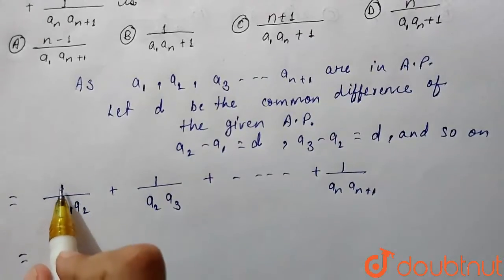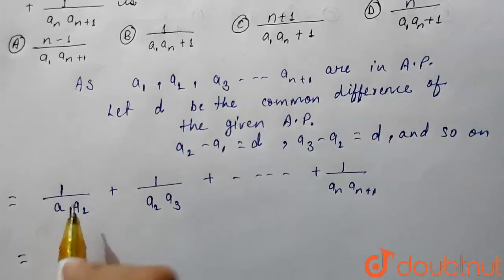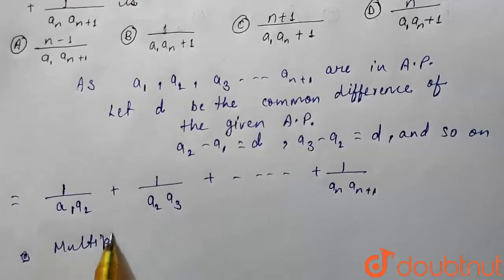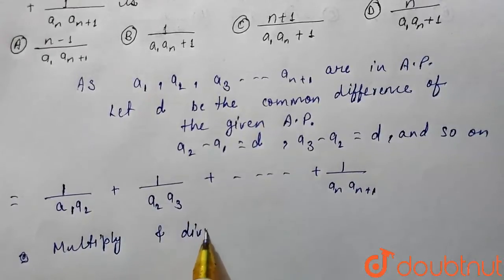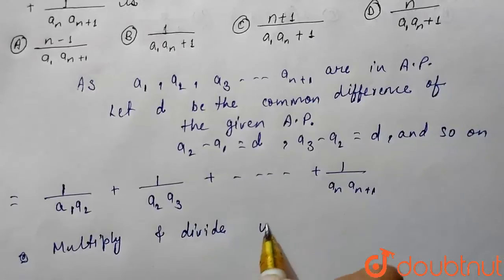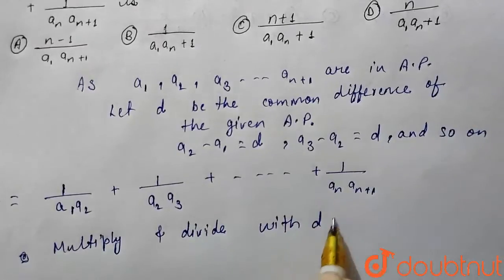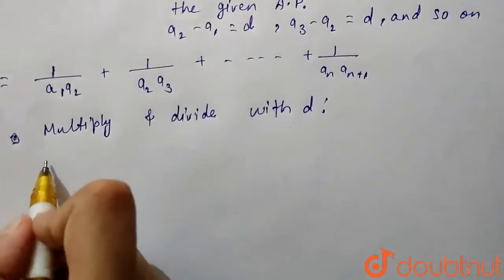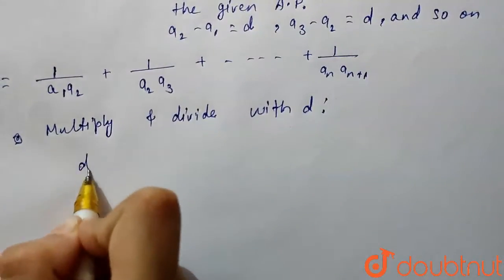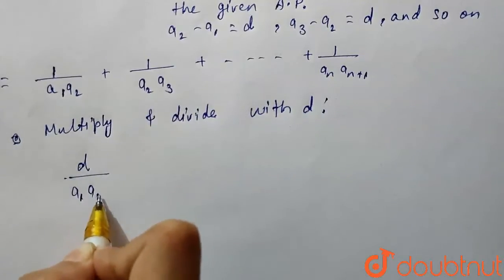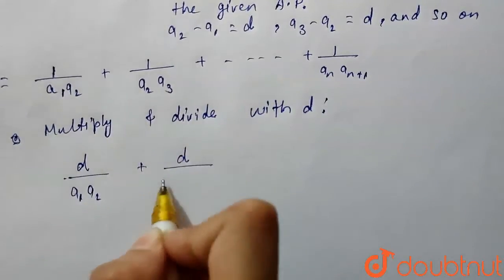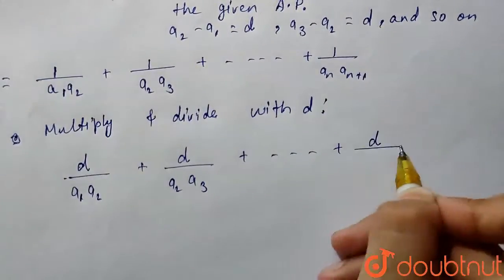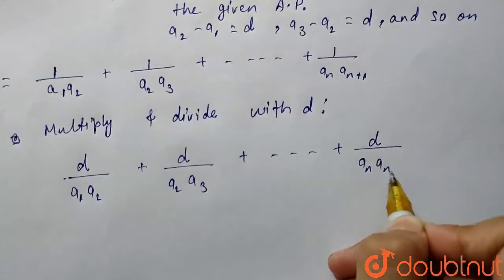To find this, let's multiply and divide with d. We will get 1 by d times d upon a1a2 plus d upon a2a3 till plus d upon anan plus 1.